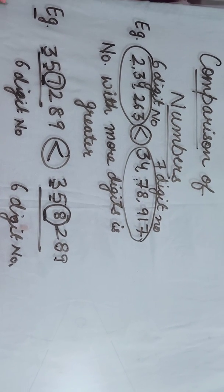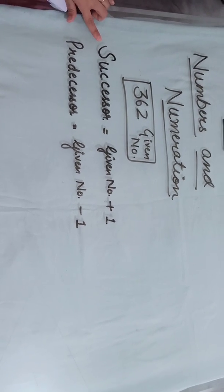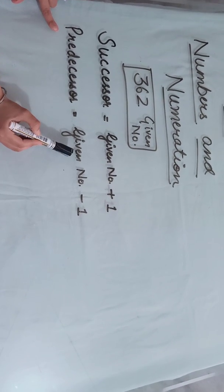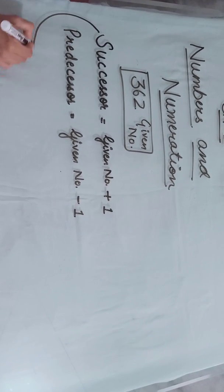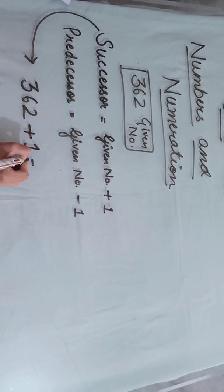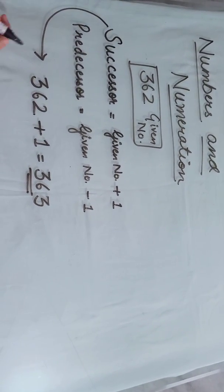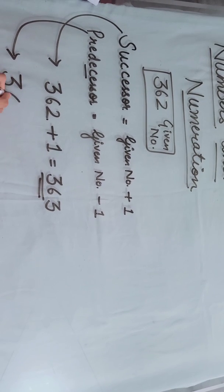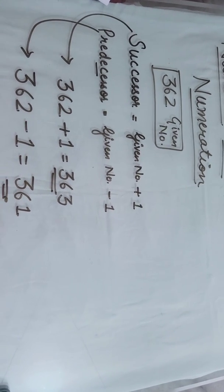Now let's talk about the successor and predecessor of a number. To write the successor, add one to the given number. To write the predecessor, subtract one from the given number. For example, given the number 362: its successor is 362 + 1 = 363, and its predecessor is 362 − 1 = 361.